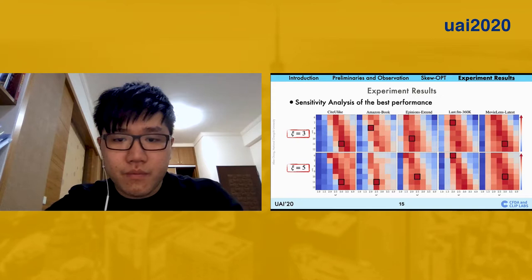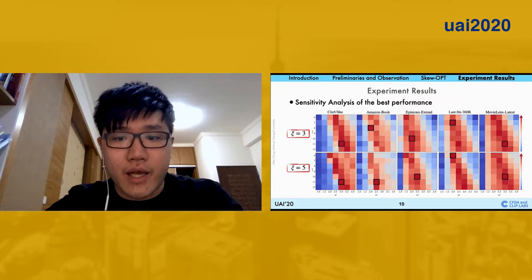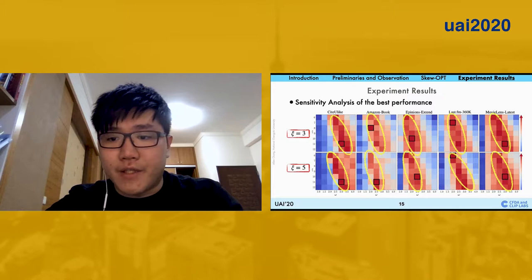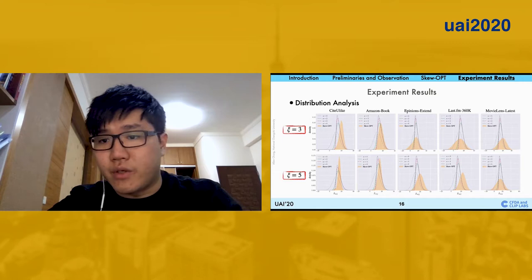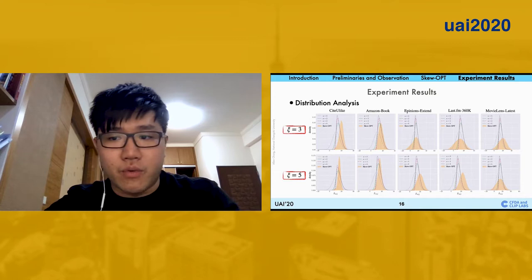The figure shown in this slide provides the sensitivity and analysis of the best performance. The observed tendency provides the tuning strategies for training the new datasets of the skewness optimizations. This figure shows the different distributions as skewness optimizations and the skew-normal distribution with the fixed location parameters and the scale parameters.